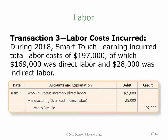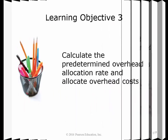They incurred total labor costs of $197,000, of which $169,000 was direct labor and $28,000 was indirect labor. Work in process inventory gets $169,000 debited, manufacturing overhead gets $28,000 debited, and wages payable is credited. Remember, all finished goods are just a combination of raw materials, labor, and overhead costs divided across products.